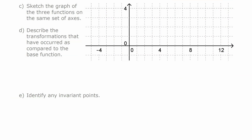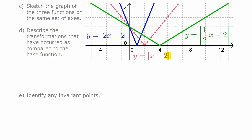Graphing the three functions, the base function is y = |x − 2|. When we replace x with 2x, the graph is horizontally compressed — the point with x = 2 moves to x = 1, x = 6 moves to x = 3, and x = −2 moves to x = −1. So it has experienced a horizontal compression by a factor of one-half.